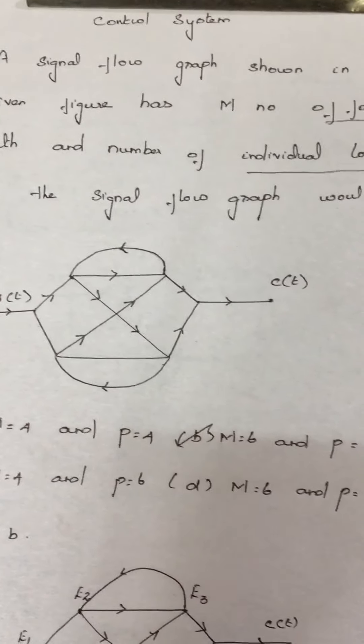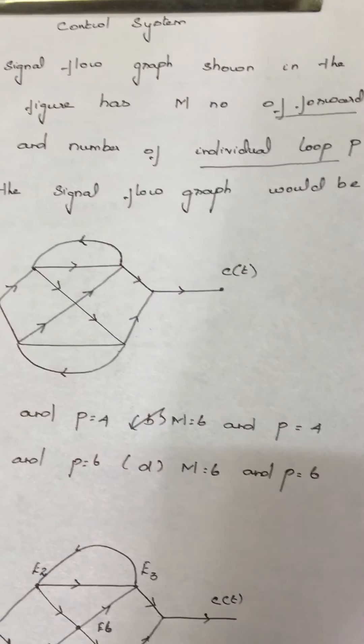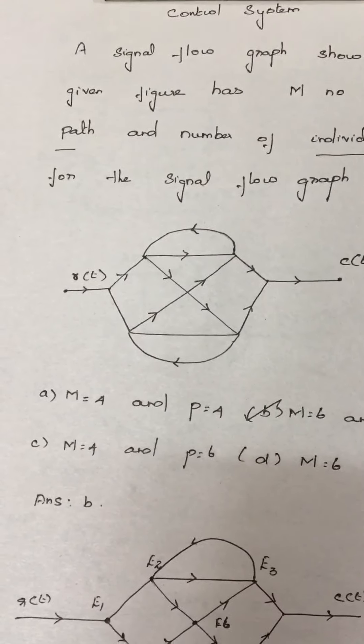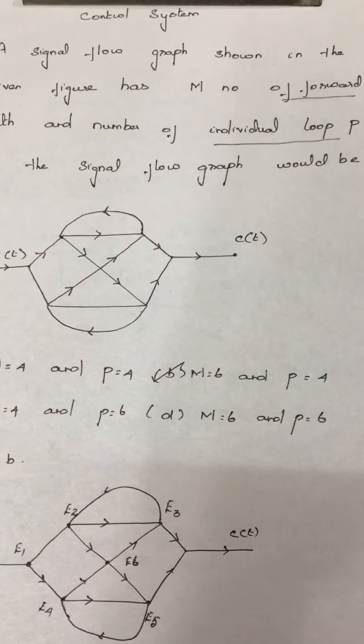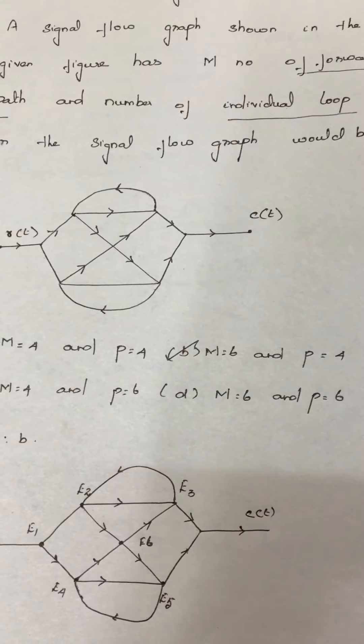A signal flow graph shown in the given figure has M number of forward paths and the number of individual loops P. For the signal flow graph, what would be the values? The options are: